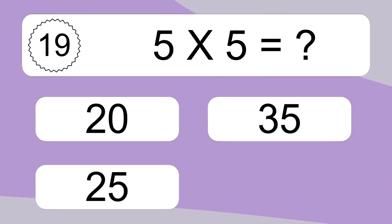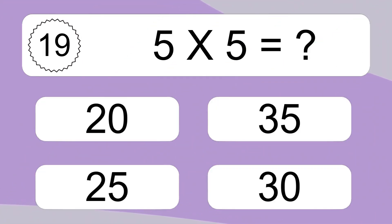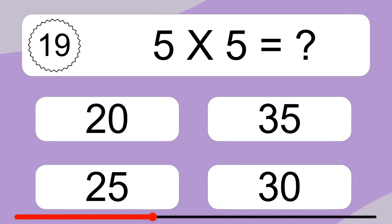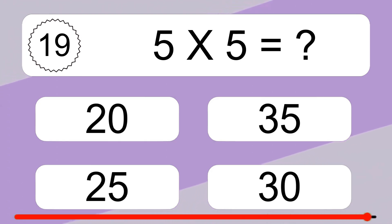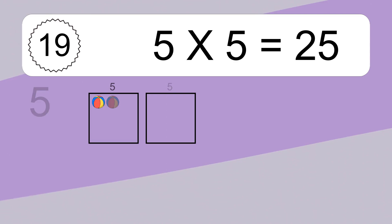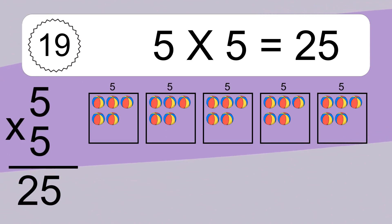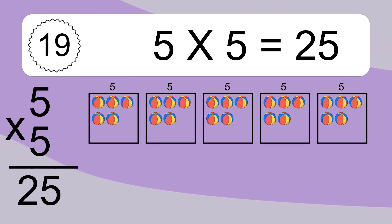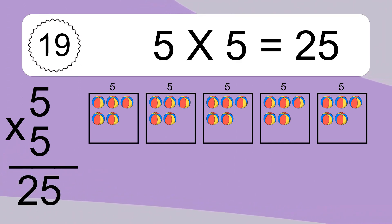5 x 5 equals 25. We have 5 boxes, and each box has 5 colorful balls inside. If you count all the balls in all the boxes together, you will have 5 x 5 balls. This equals 25 balls.